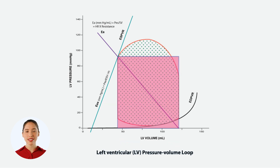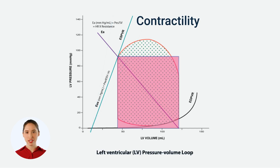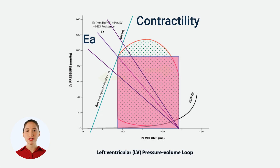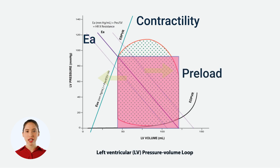You can change the size of the PV box in three ways. First, by altering contractility, which swings the ESPVR line in or out. Secondly, we can change the slope of the arterial elastance line, either increased or decreased. Or by shifting the entire elastance line right or left, which adjusts preload. Each one of these changes affects the box's dimensions, specifically end-systolic pressure and stroke volume.